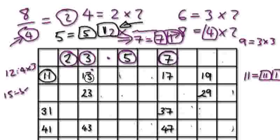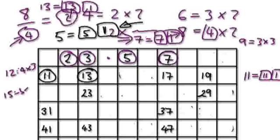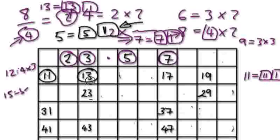So 13 would be your next prime. Again, the only way to break up 13 is 13 times 1, which is itself and 1. So it is a prime. Now count every 13 steps: notice that 10 is directly below 13.